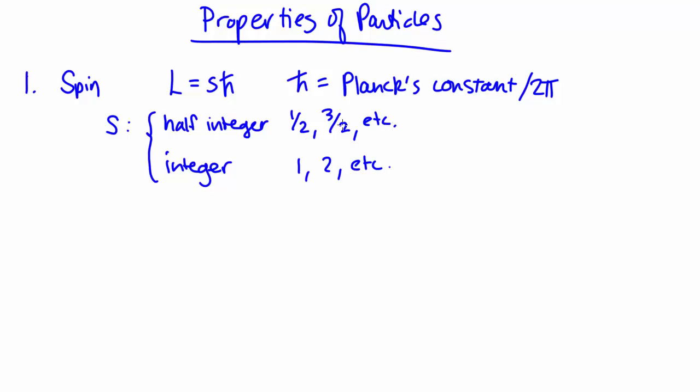I've noted that spin can either be half integer or integer. We have special names for the particles that fall into each of these categories. So the half integer particles we call fermions.